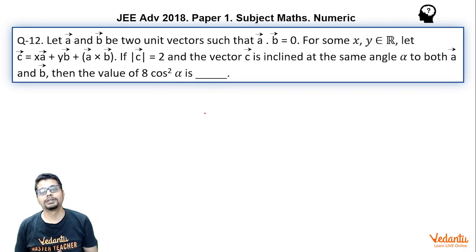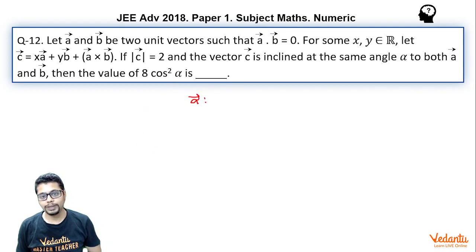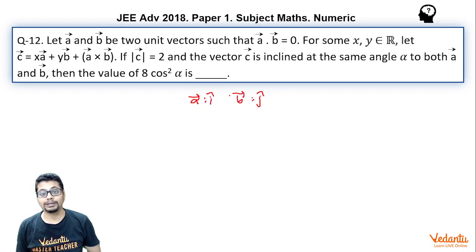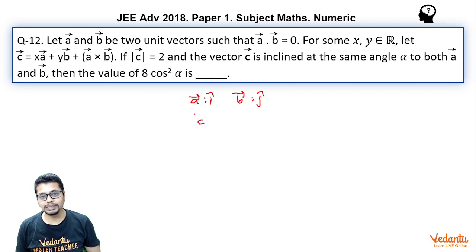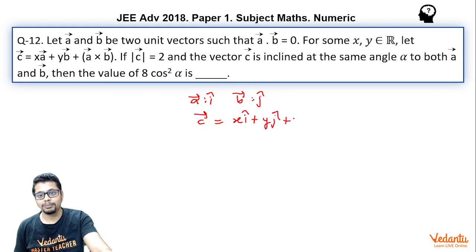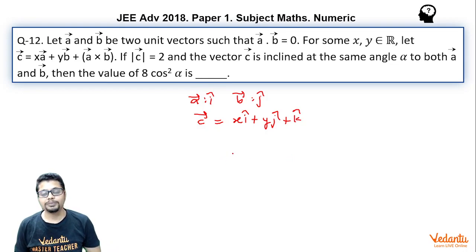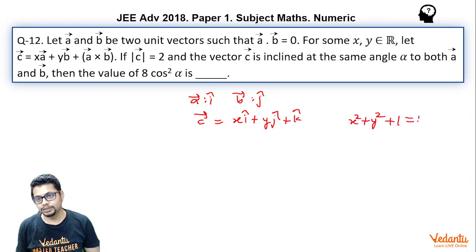Now let's first solve it in a very quick way. You may assume A vector to be î cap, B vector to be ĵ cap. A vector dot B vector is indeed 0 and they are indeed unit vectors, and hence A vector cross B vector will turn out to be k̂ cap. So based on that, C vector is essentially Xî cap plus Yĵ cap plus k̂ cap. Now magnitude of C vector is 2, that means magnitude of C vector squared is 4, that means X² + Y² + 1 = 4.